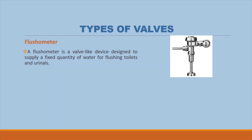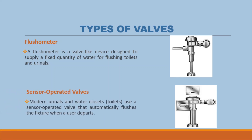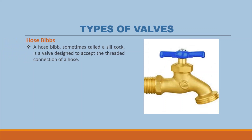A pressure reducing valve is an adjustable valve designed to reduce pressure to a specific setting. A flushometer is a valve-like device designed to supply a fixed quantity of water for flushing toilets and urinals; it automatically shuts off after a measured amount of water flow to conserve water. Modern urinals and water closets use a sensor-operated valve that automatically flushes the fixture when a user departs. A hose bib, sometimes called a sill cock, is a valve designed to accept the threaded connection of a hose, allowing water near the exterior wall to drain when the valve is closed to avoid freezing in severe winter temperatures.